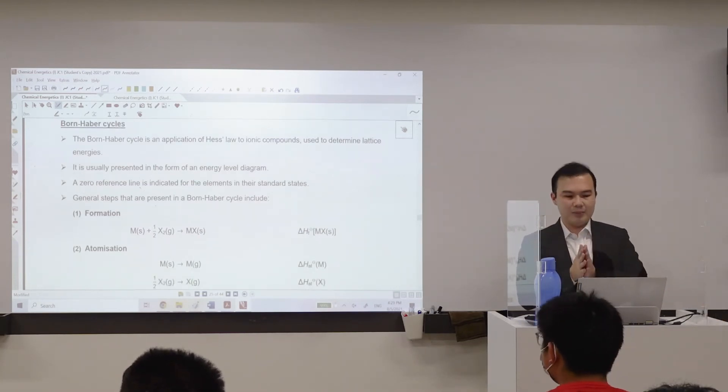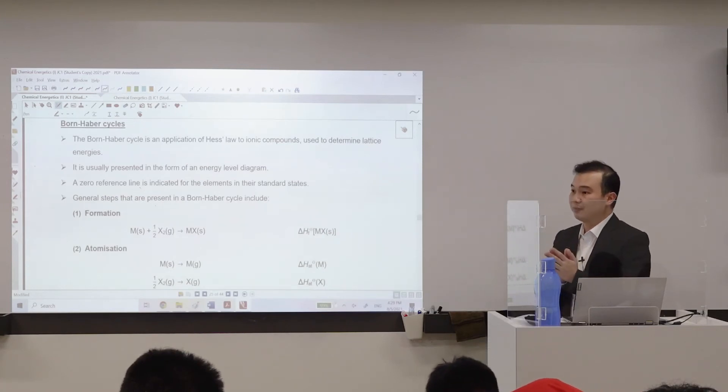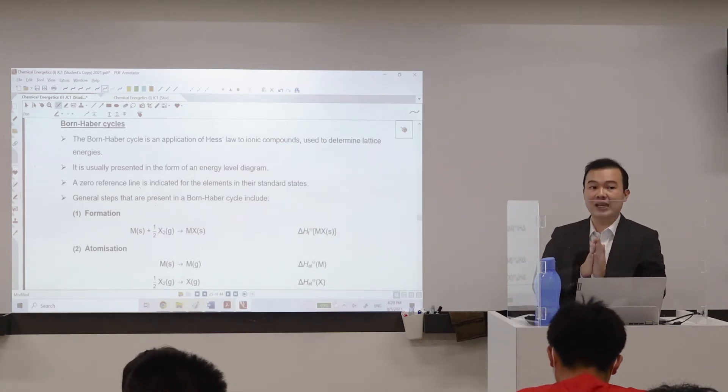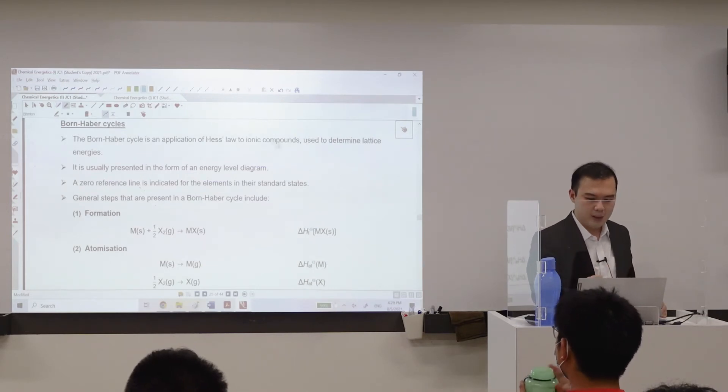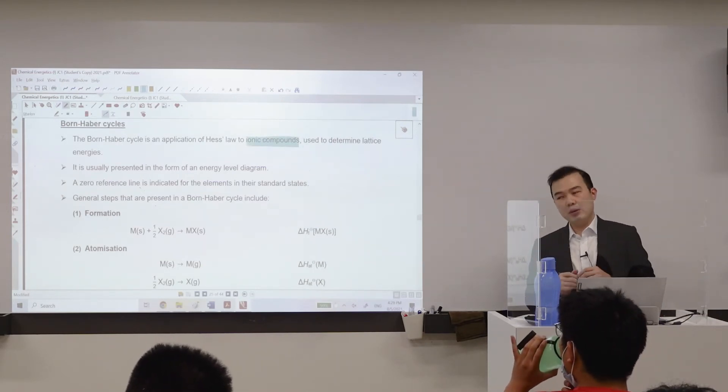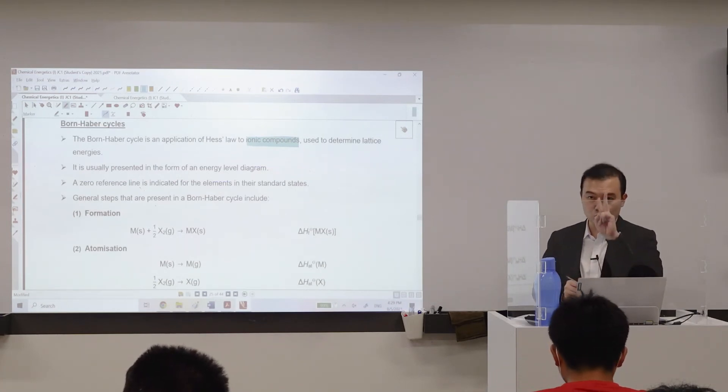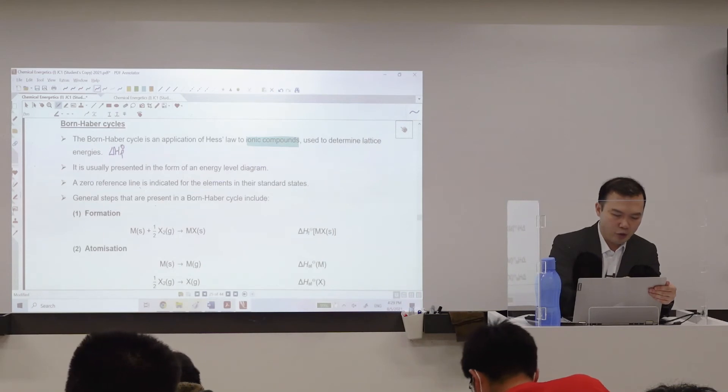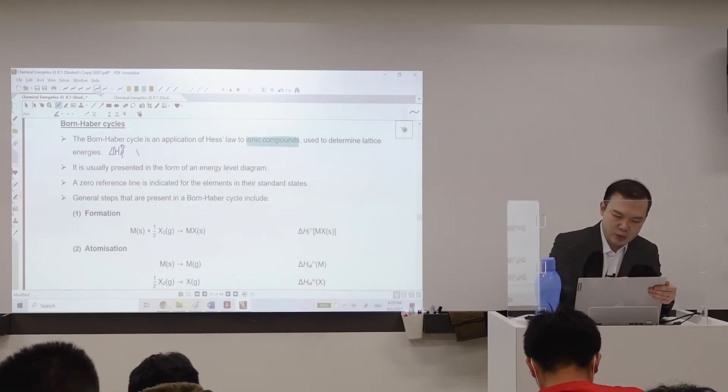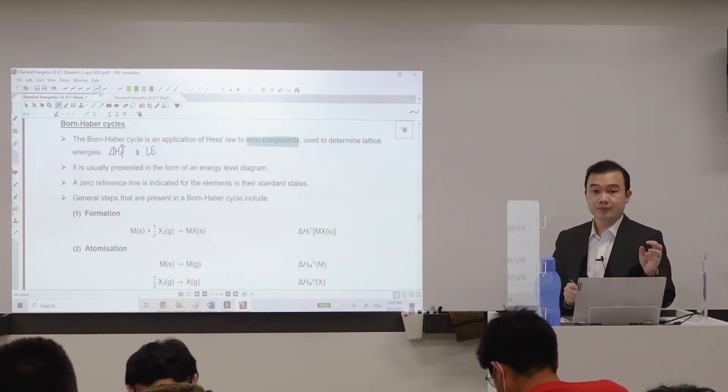All of this will culminate in this idea called a Born-Haber cycle. You must know what's the objective of Born-Haber cycle first. Born-Haber cycle, first things first, it only applies to ionic compounds. And what we want to do over here is to relate two enthalpy changes together. I'm very interested in connecting formation as well as lattice energy.